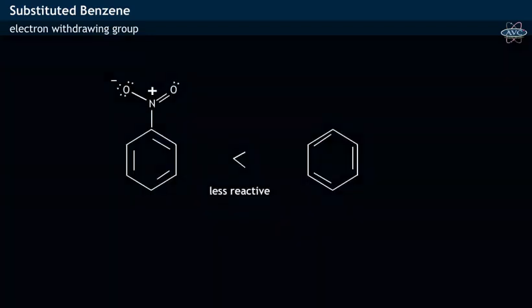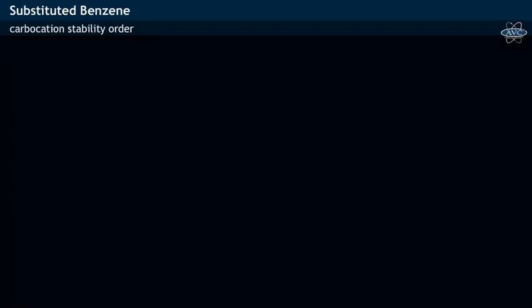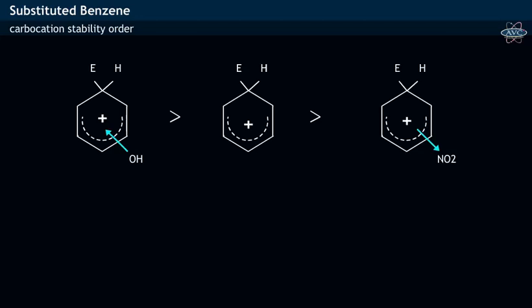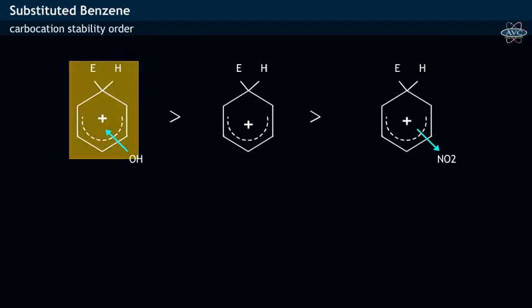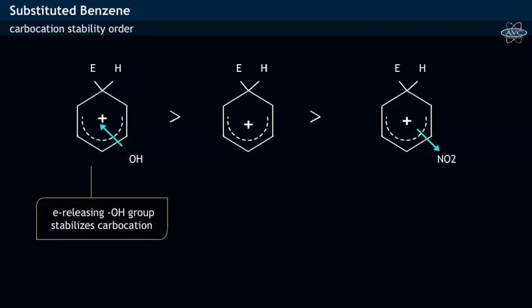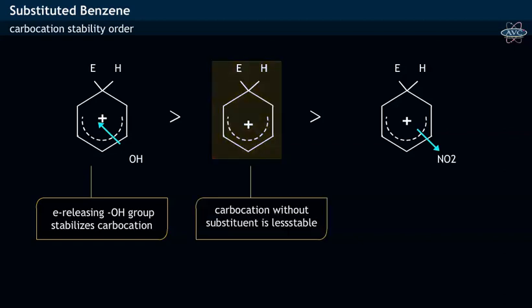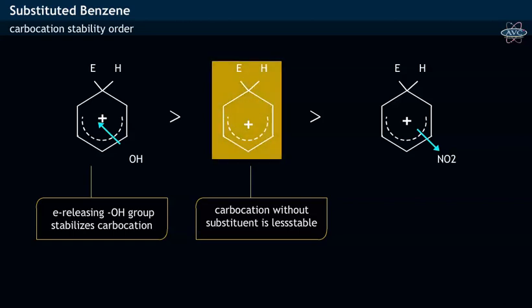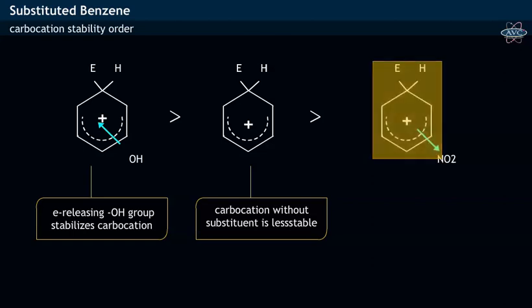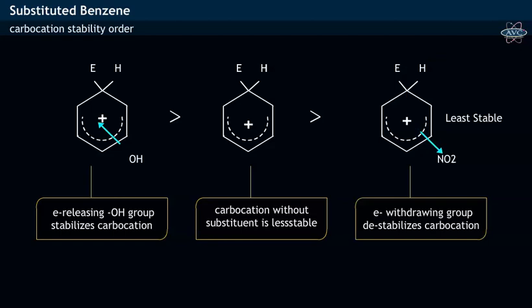Thus, nitrobenzene is least reactive among the three compounds. The arinium ion stability order of the three compounds may be seen: the arinium ion of phenol with the electron-releasing hydroxyl group is most stable, while the arinium ion of nitrobenzene is least stable, as the electron-withdrawing nitro group deactivates or destabilizes the carbocation.